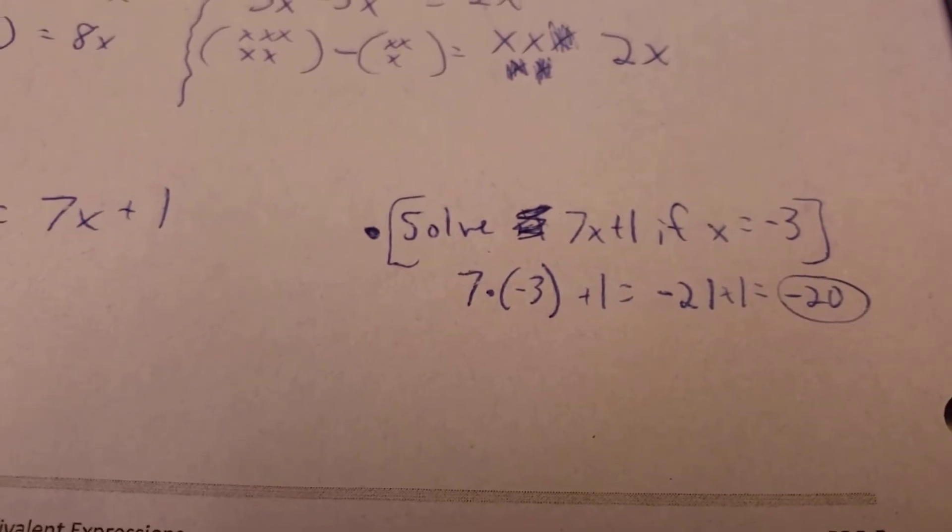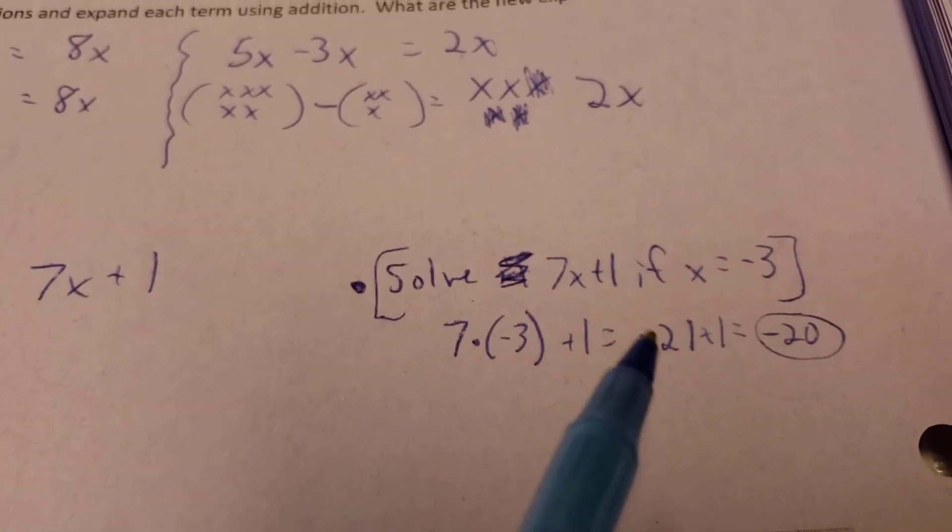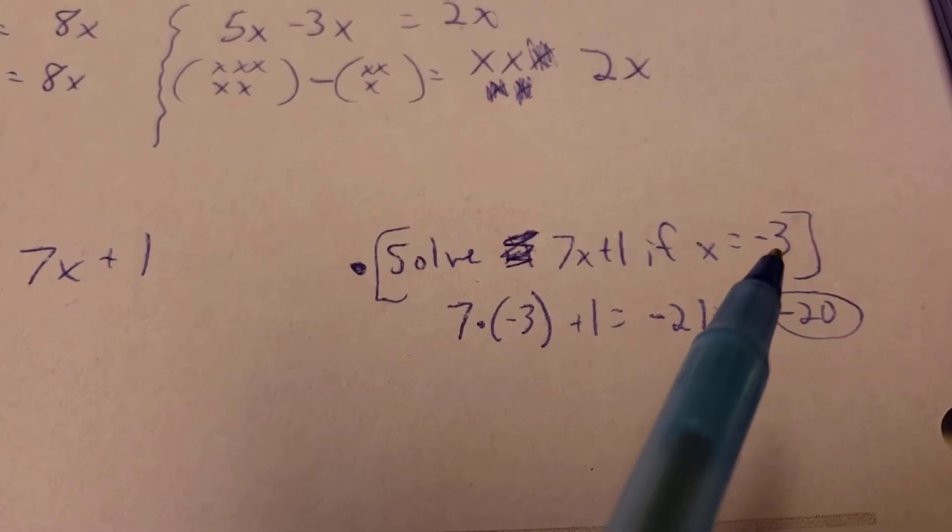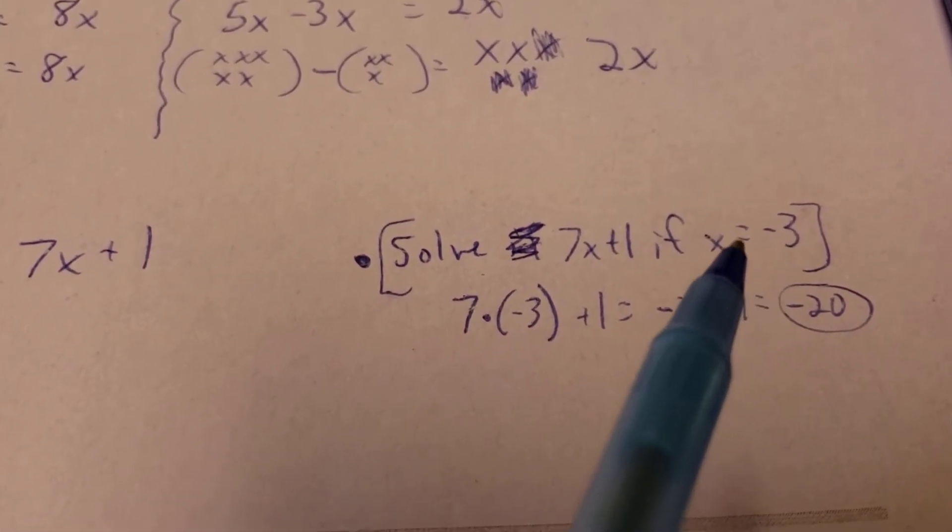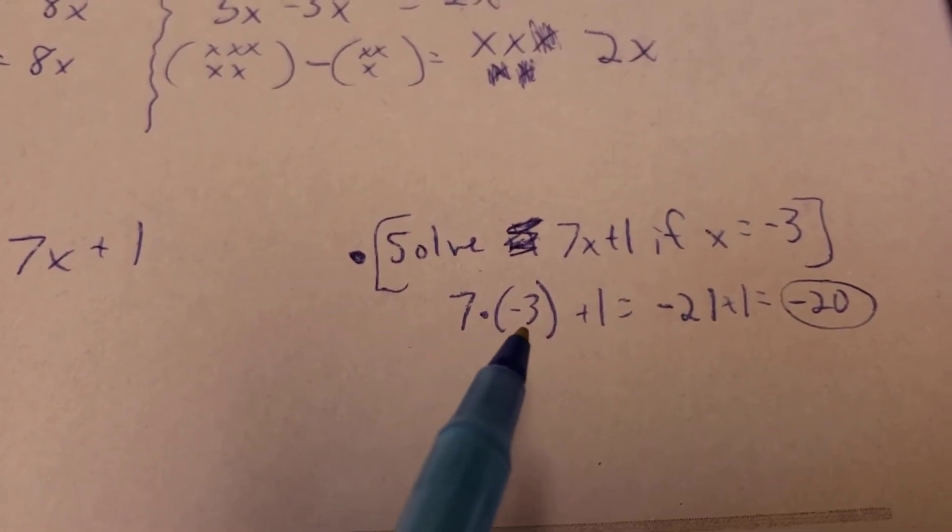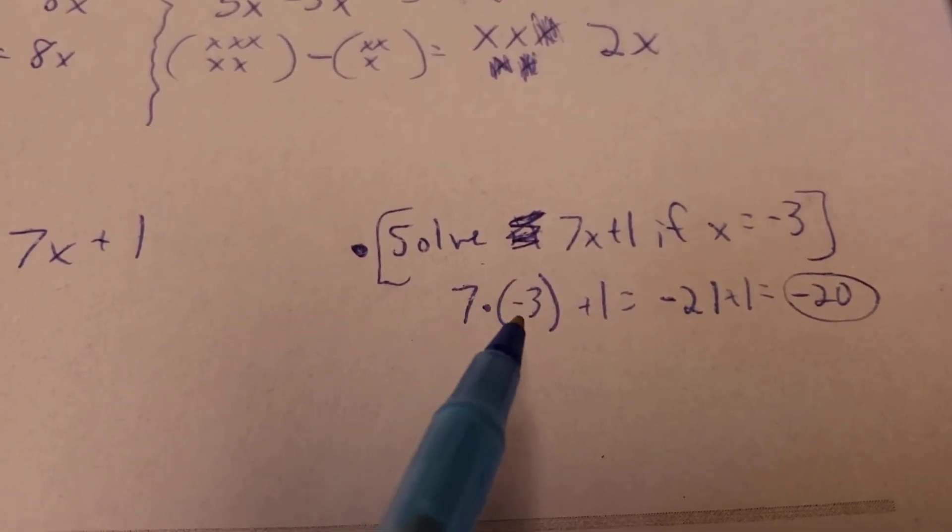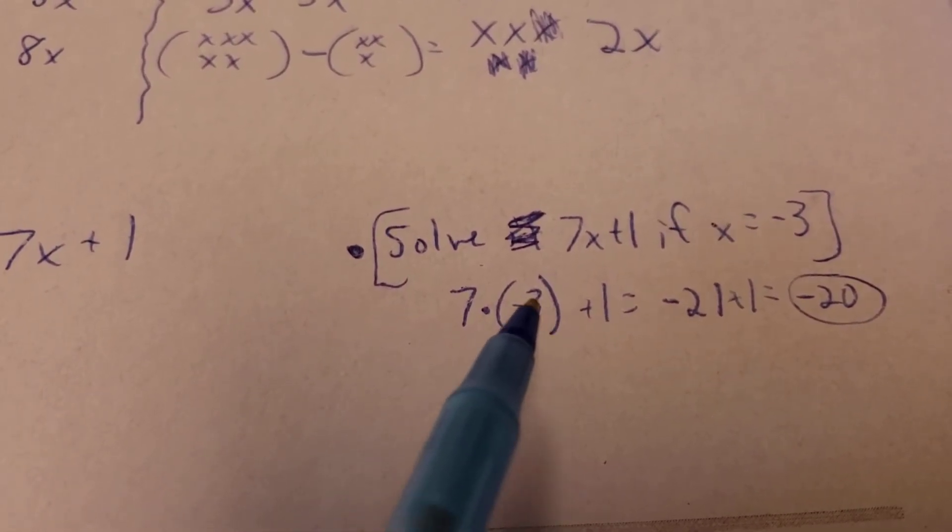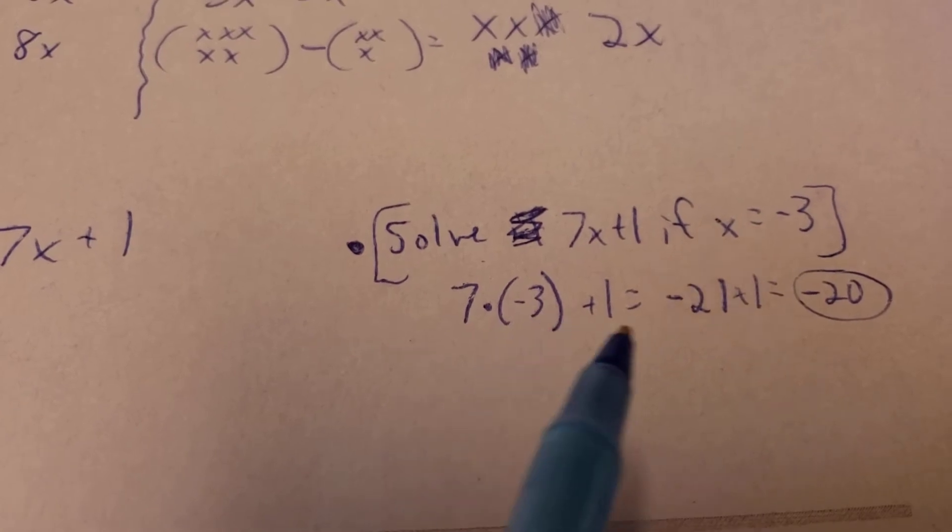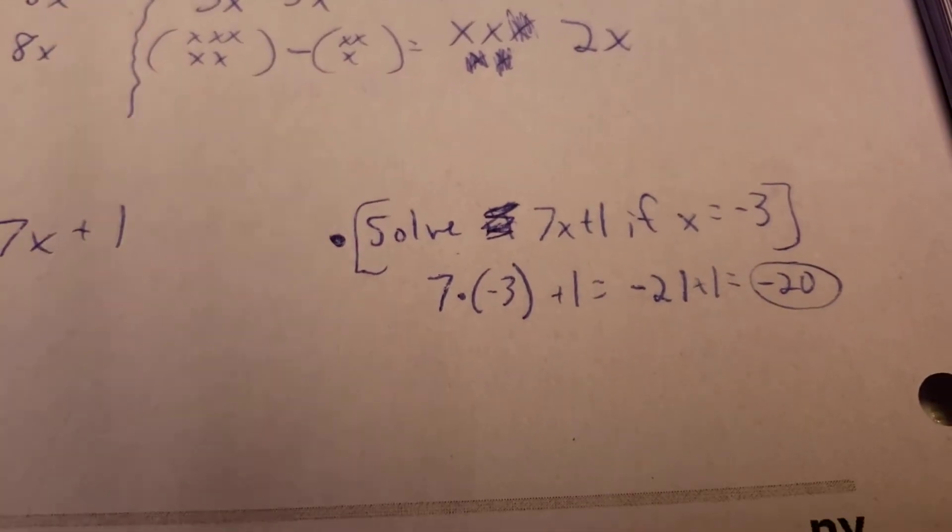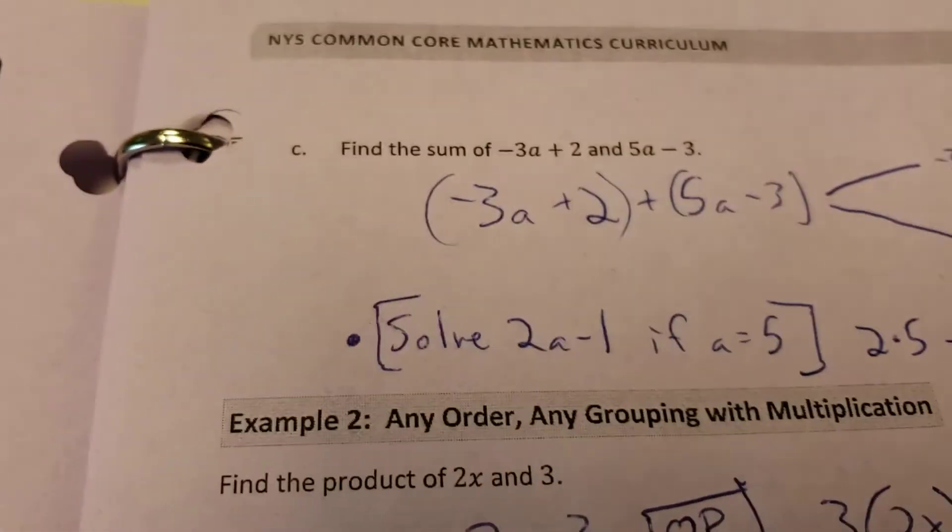So for example here, if I wanted to solve 7x plus 1 if x equals a negative 3. Well, I can actually finish the problem if someone tells me that x equals negative 3. Because now it takes 7 times, not just x. If x is negative 3, I put 7 times negative 3 plus 1. Now, of course, I multiply first before I would add things. So 7 times negative 3 gives you a negative 21. Add 1 and you get a negative 20.